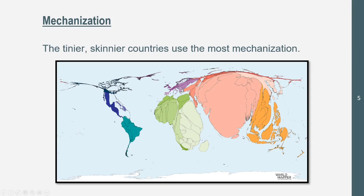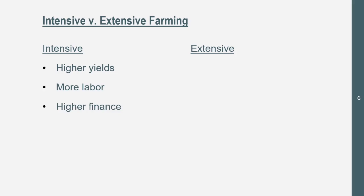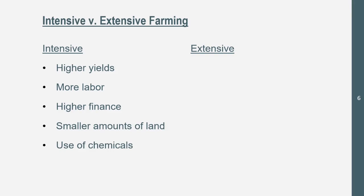So that's farming for you. Now, something else you should know is intensive and extensive farming. Intensive farming characteristics include higher yields — you're getting more crops — more labor to create those higher yields, higher finance to pay for the labor, smaller amounts of land, and the use of chemicals: pesticides, fertilizers, insecticides, all of that. And of course, intensive farming operations are close to markets — they're farming close to where people are buying their goods, near cities.